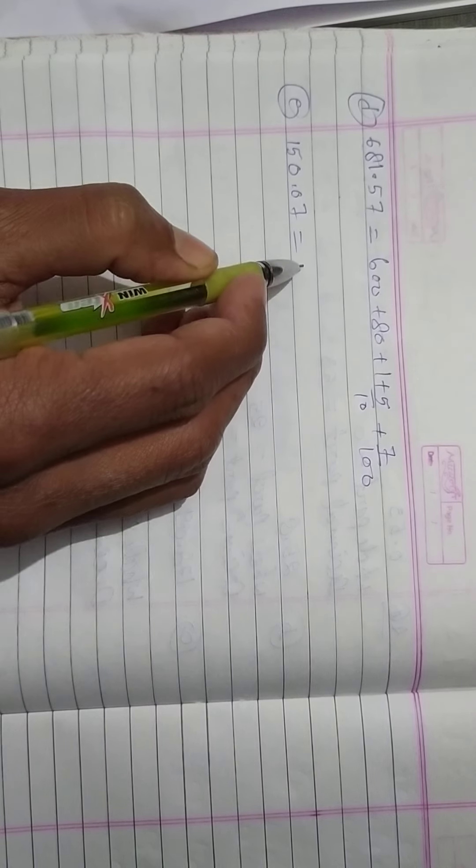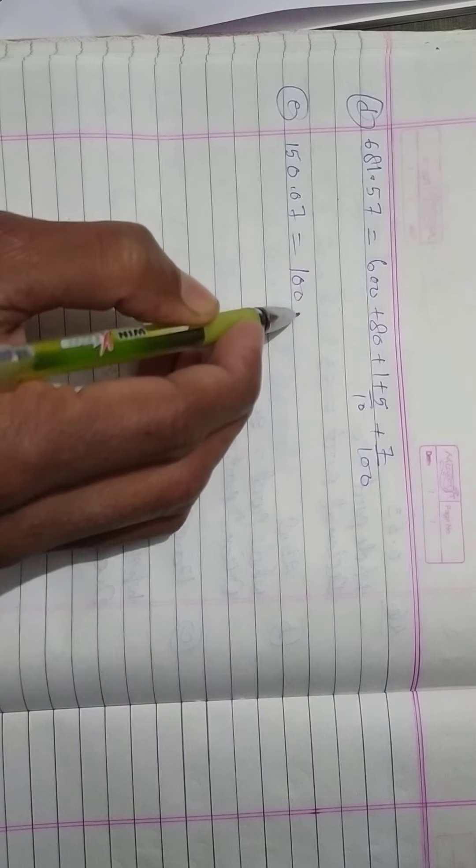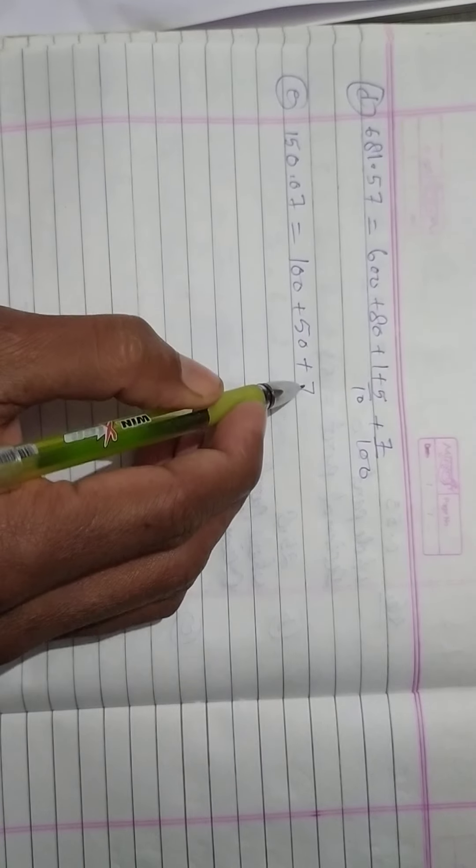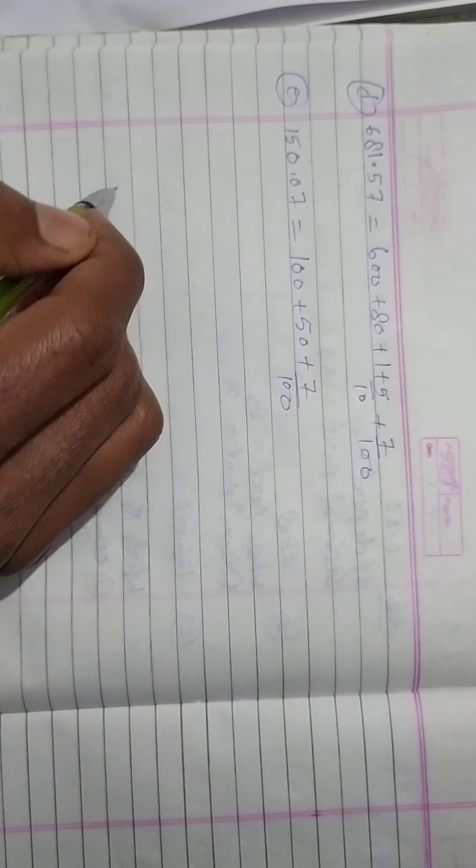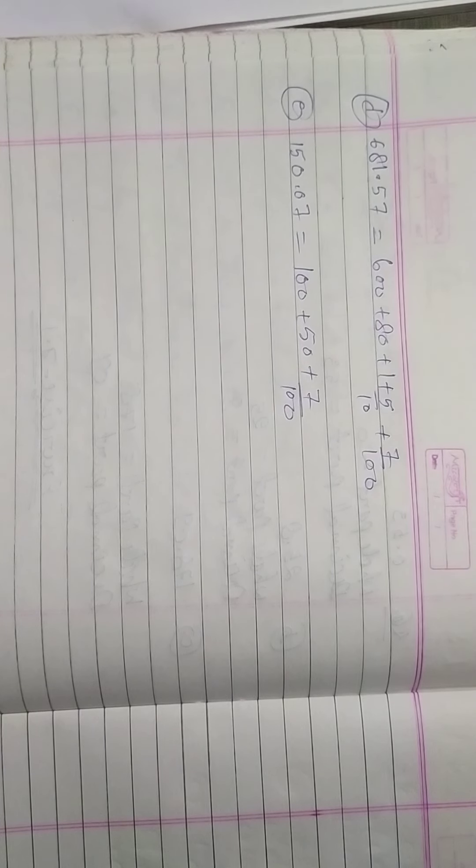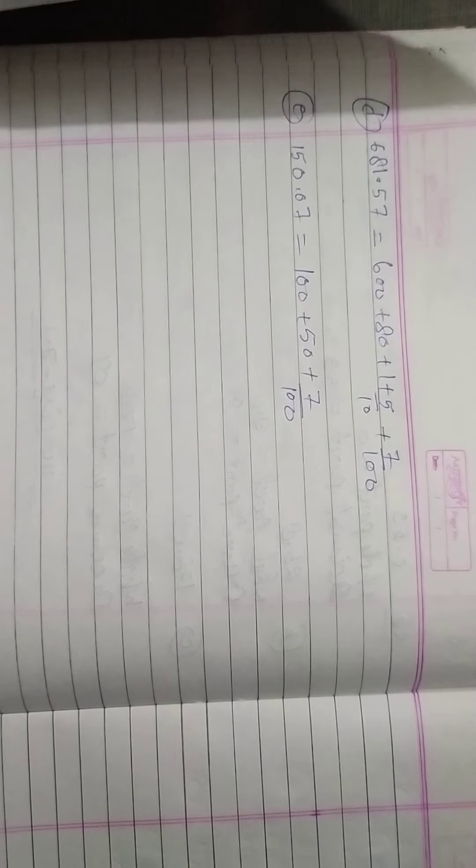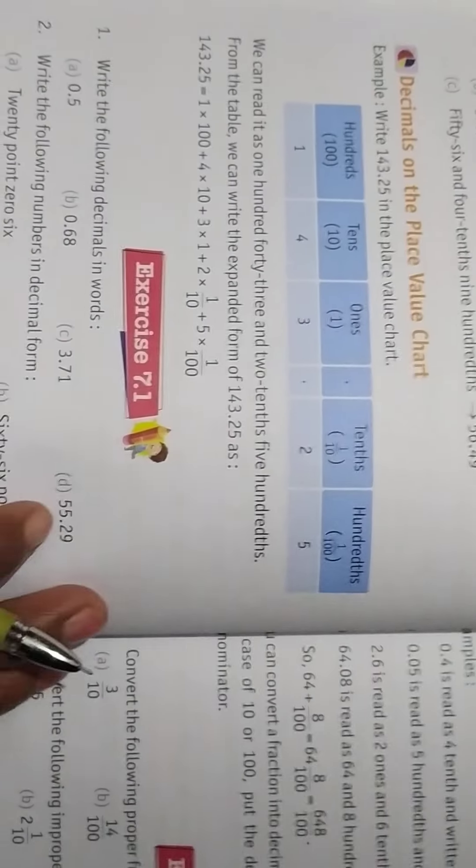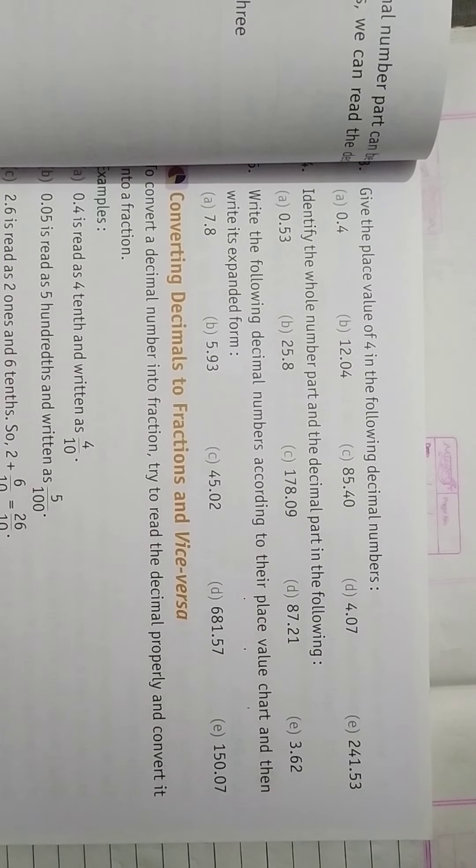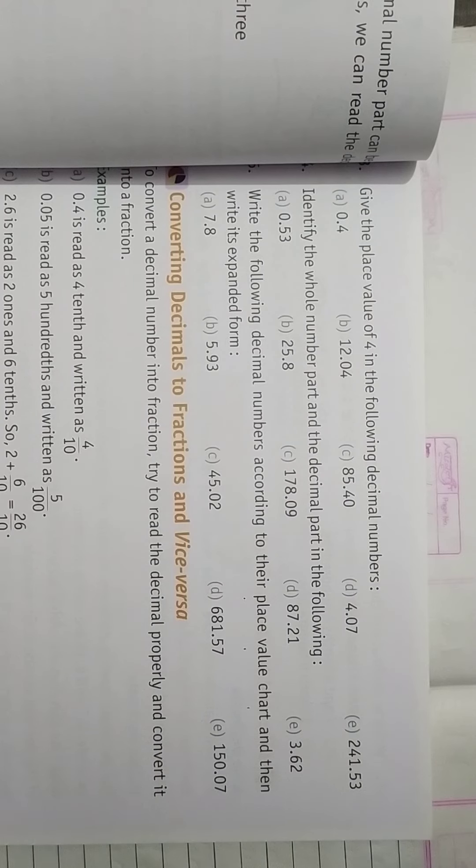150.07 we have completed question number 5 exercise 7.1. Exercise 7.1 is finished because we have completed its question number 5. So for today it ends, we will meet in next video with next exercise. Until then, thank you, continue your work.